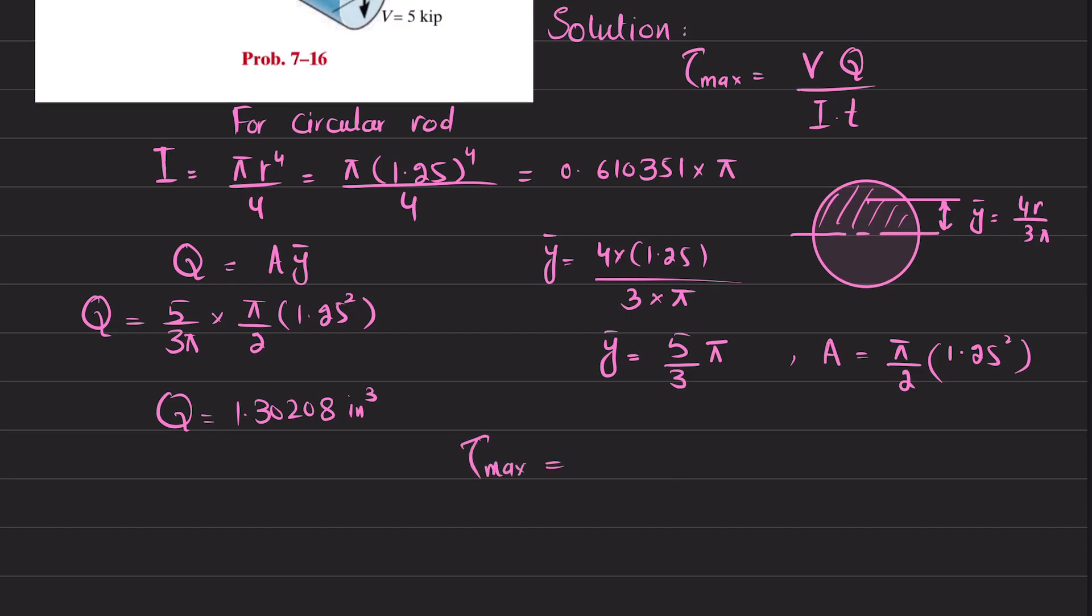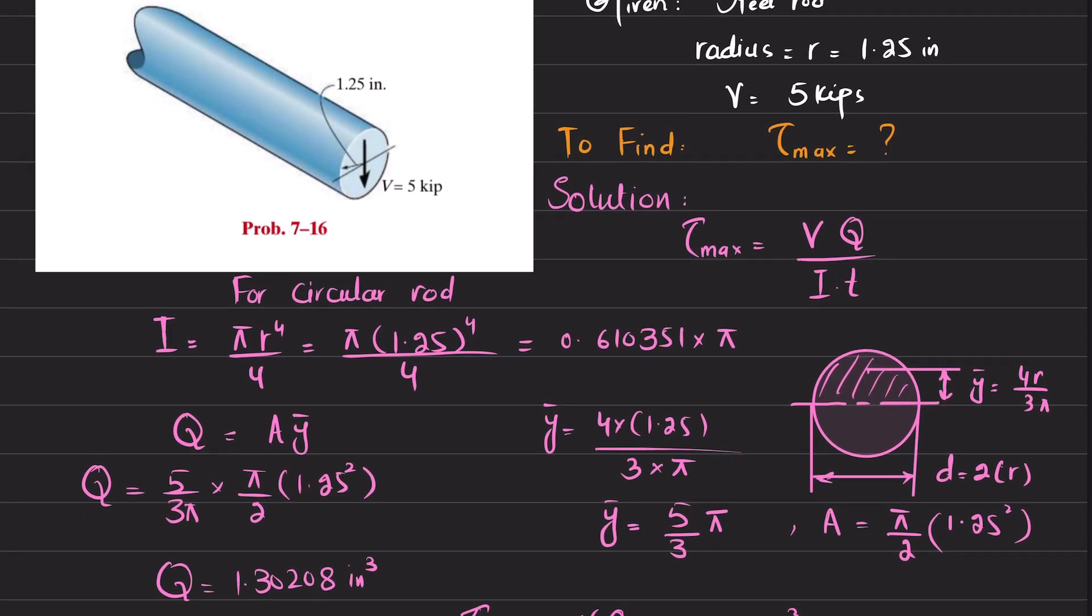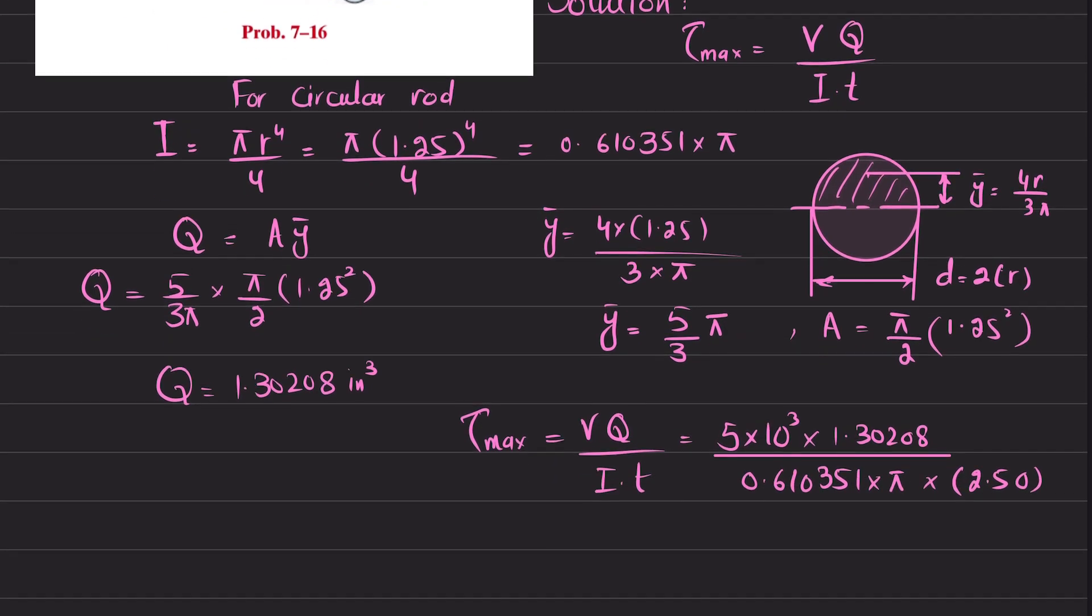Q is 1.30208 inch³ divided by I, which is 0.610351 times π, and the thickness is the diameter. The radius is 1.25, and this thickness is the diameter, which equals 2 times r, which is 2.50. So 2 multiplied by 1.25 is 2.50.